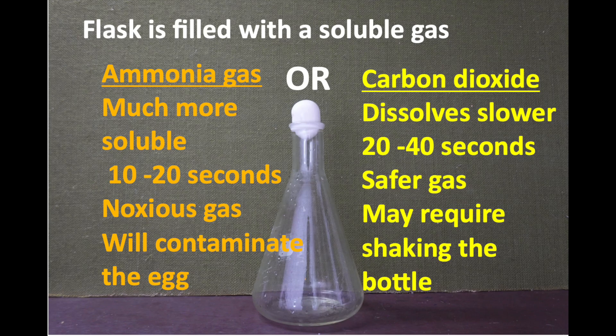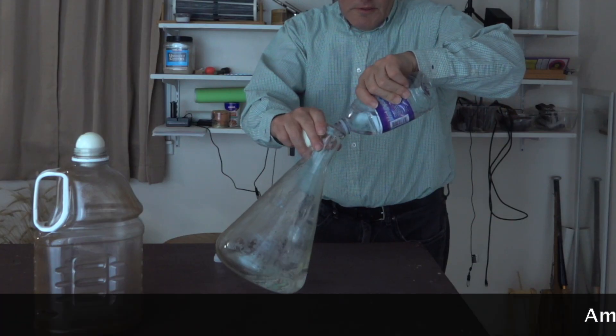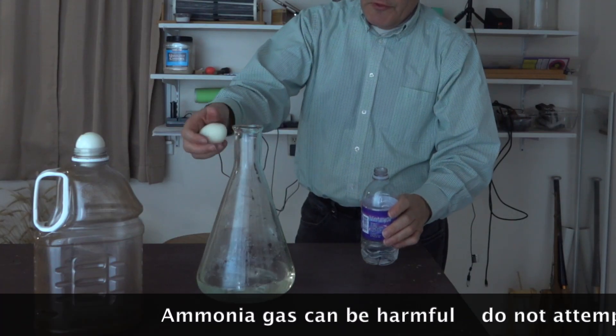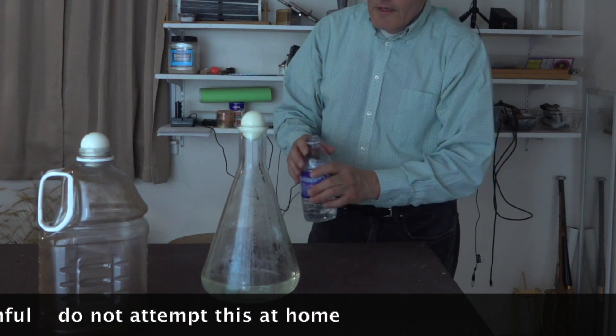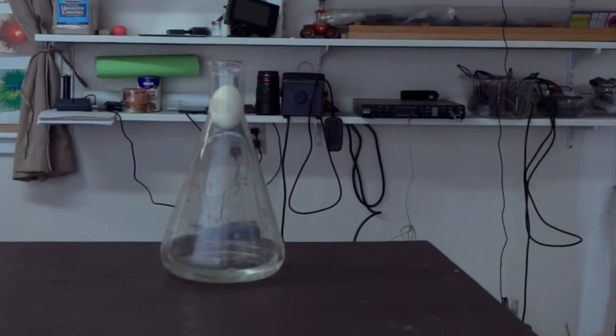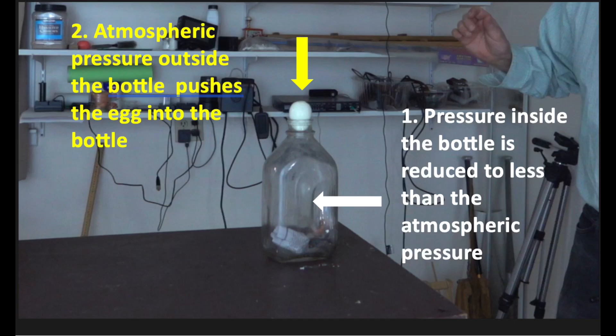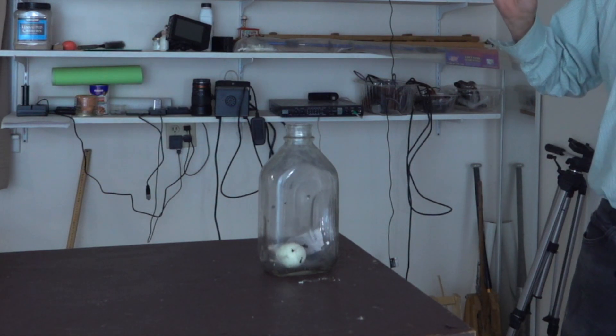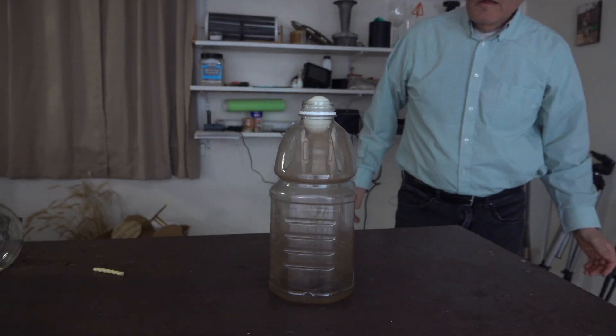In our last example, the flask was filled with a gas that dissolves. As the water is added to it, the ammonia goes into solution, taking up less space, so once again the pressure drops. Since the pressure is greater outside the bottle than inside, it's the atmosphere that's actually pushing the egg into the bottle.